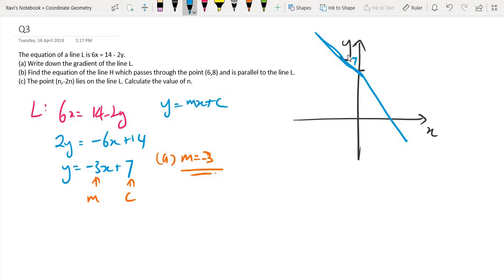Now in part B, we are told that there is another line H which passes through the point 6, 8 and is parallel to the line L. So this is the line L and we have another line H. The H could be either below this line or above this line. But since we know that it is parallel, for part B, we can say that the equation of the line is y equals negative 3x plus c. And since we know that it passes through this point, we can substitute this point inside.